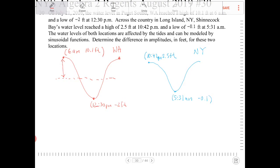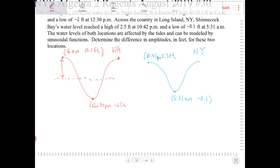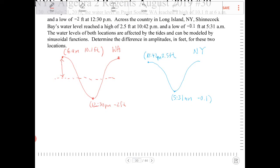Let's subtract the two. So we're going to take 10.1 minus negative 2, and this will give us the full distance between the max and min, and then we divide by 2.